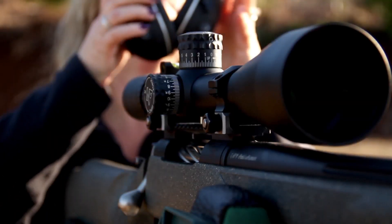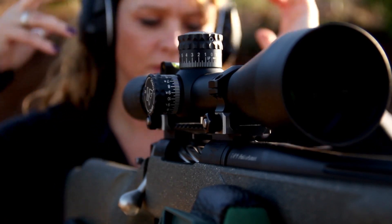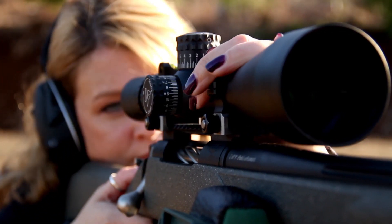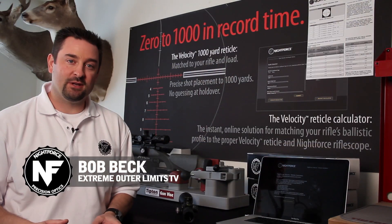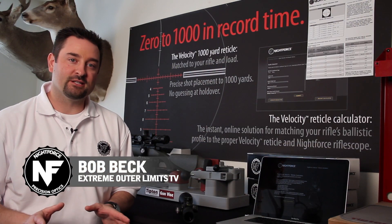As we have discussed, the Velocity 1000 reticle is the most comprehensive reticle designed with the hunter and shooter in mind. We're going to take a few minutes here for an overview and walk you through the reticle itself.